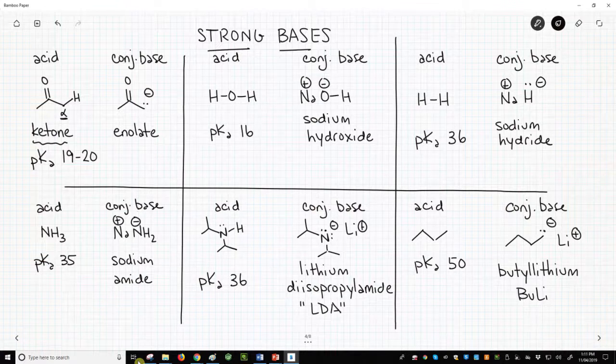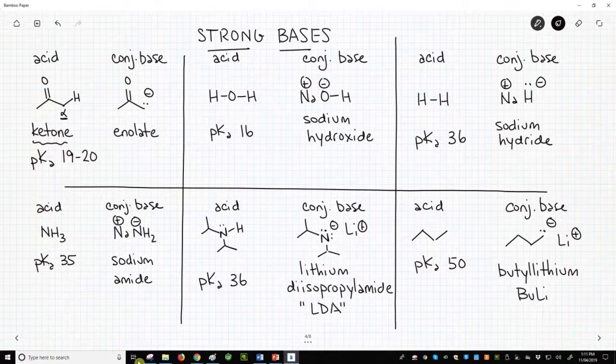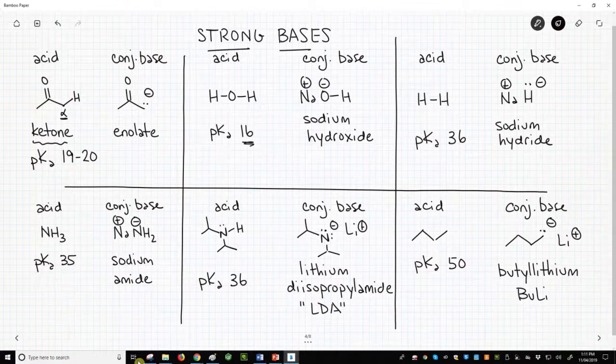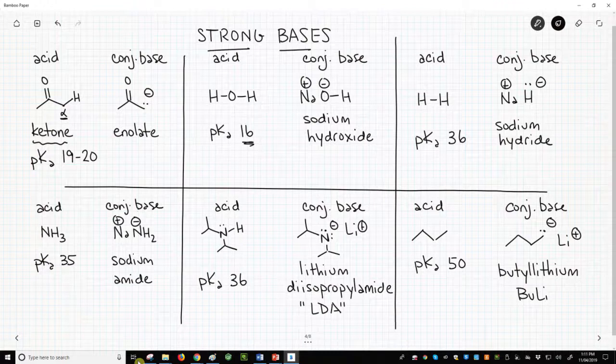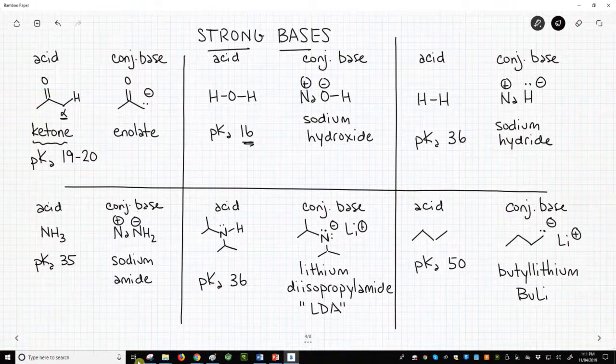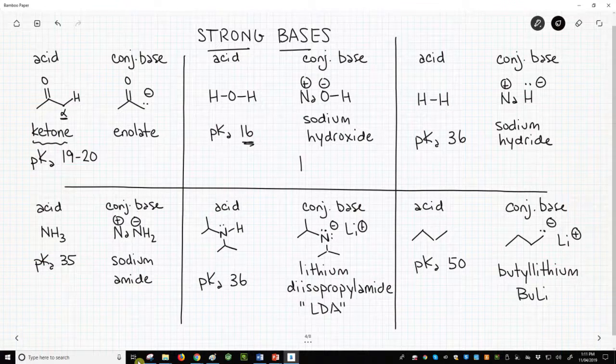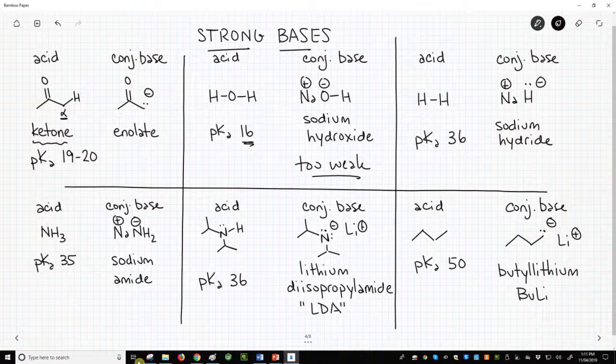Let's look at our options. Going across the top row to the right, we see water and sodium hydroxide as an acid conjugate base pair. The pKa of water is about 16, too low for sodium hydroxide to be a good base for making high concentrations of enolates. So this is too weak.